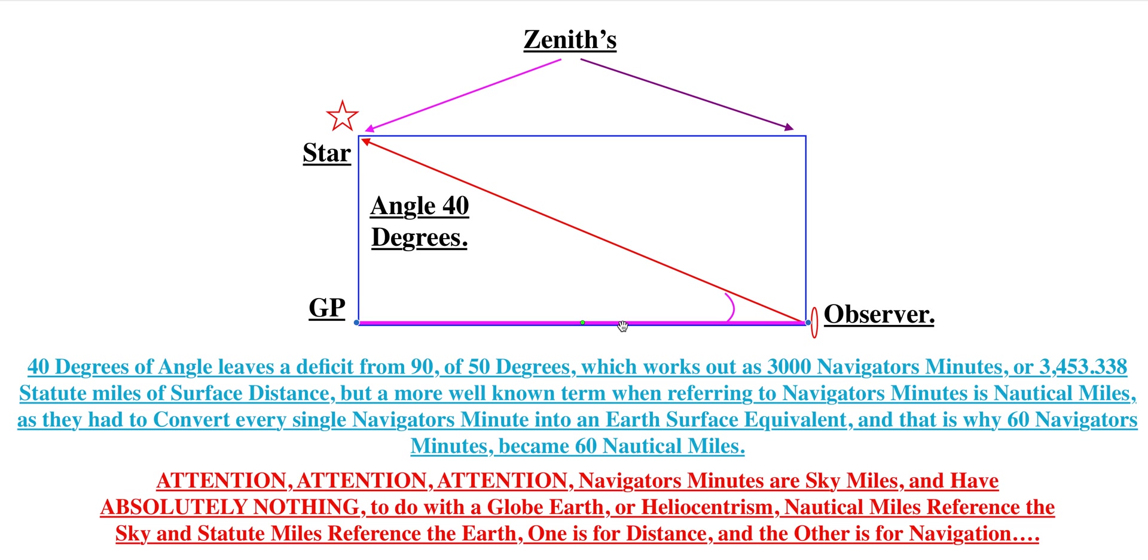because there are 60 minutes per degree, 60 navigator's minutes per degree. That is why we have 60 nautical miles per degree, but we have 69 statute miles.